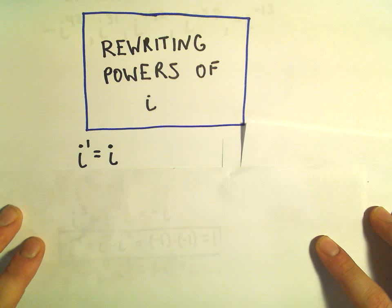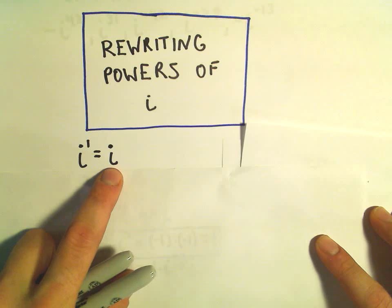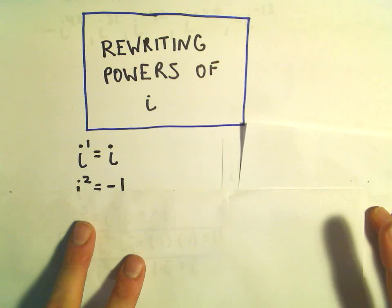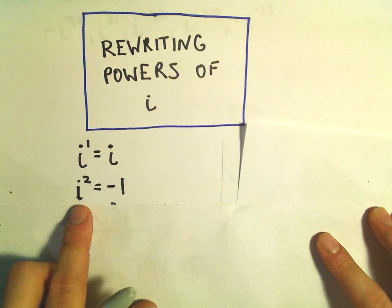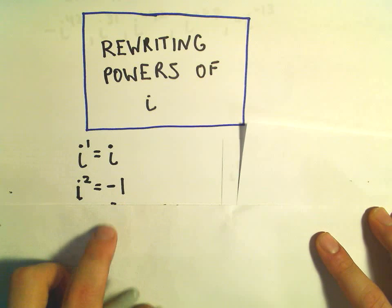So I went ahead and wrote some down here. So i to the first, that's just i, anything raised to itself is itself. i squared, by definition we say that i times i is negative 1.